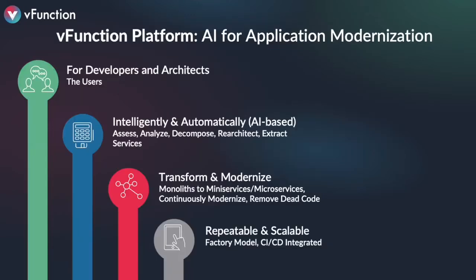vFunction is a platform for application modernization that applies artificial intelligence to intelligently and automatically assess, analyze, decompose, re-architect, and extract microservices out of the monolith itself. It's designed for developers and architects specifically, focused on the architecture itself. It allows you to transform and modernize those monoliths into either mini-services or microservices and provides a structure to continuously modernize applications going forward — including removing dead code and extracting microservices into a cloud native architecture.